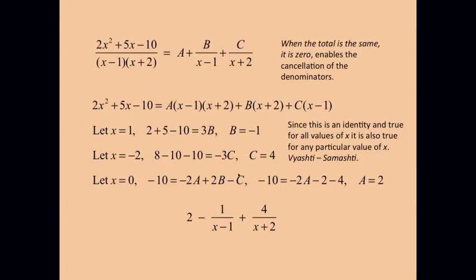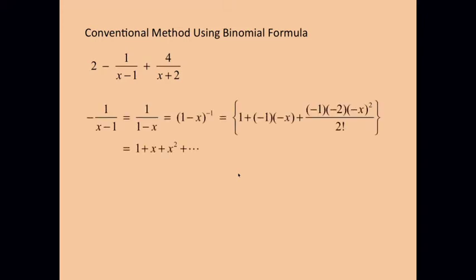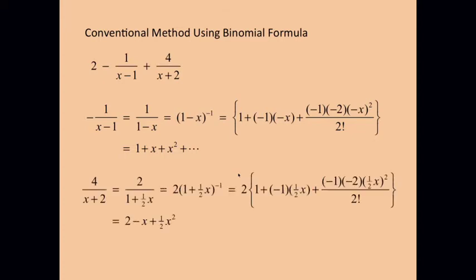Now, the second part of the problem is the one I want to concentrate more on. And we'll first look at the conventional method for dealing with these three terms. The binomial expansion for -1 / (x - 1), the first thing is to express it as (1 - x)^(-1). And then use the binomial expansion formula to arrive at the expansion 1 + x + x² and so on.